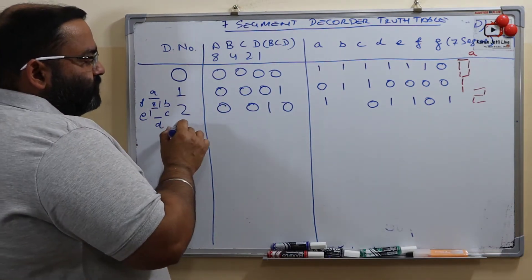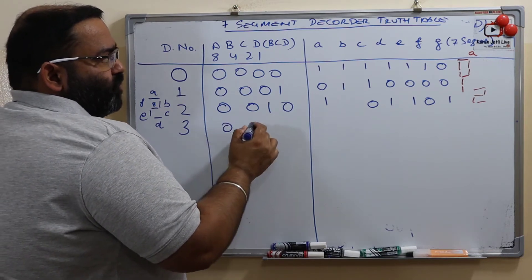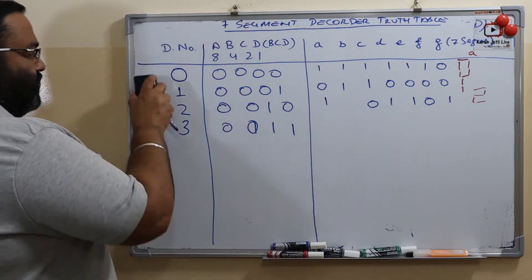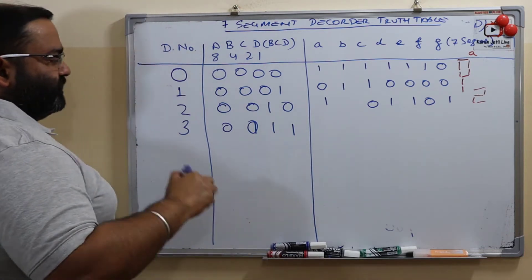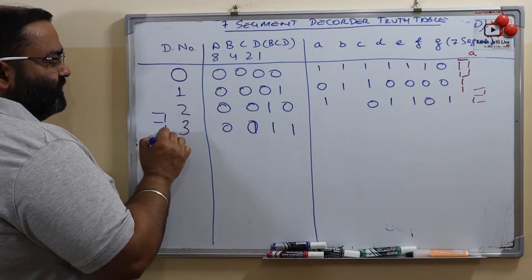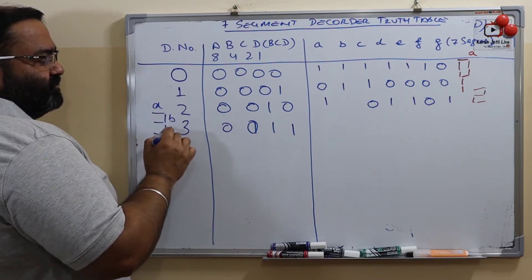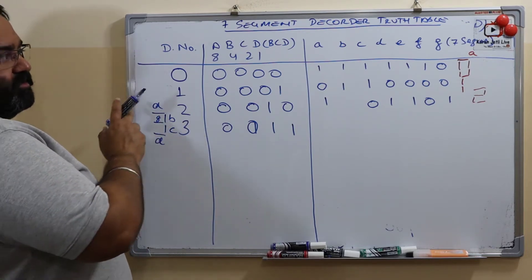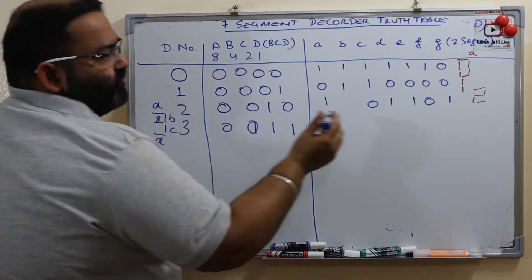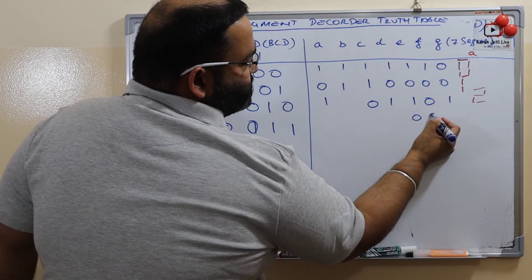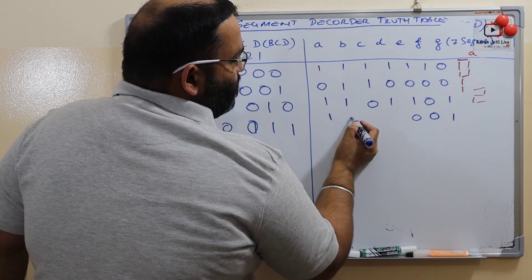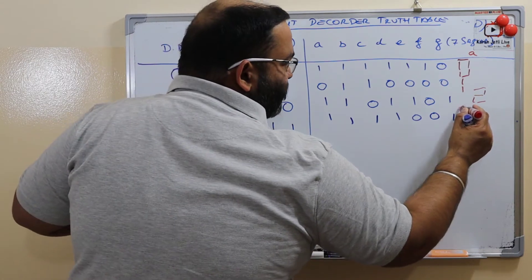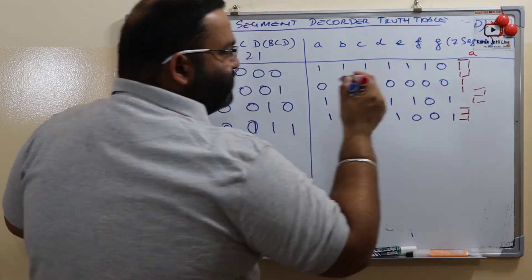Let us do it for 3. What is the BCD code for 3? It is 0011. How do we display 3? A is on, B is on, C is on, D is on, E is off, F is off, and G is on. So E and F are off, rest everything is on. And what we get here is number 3.